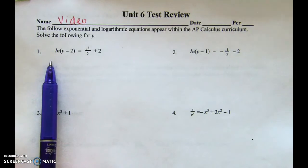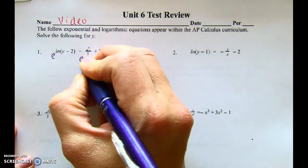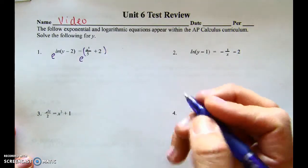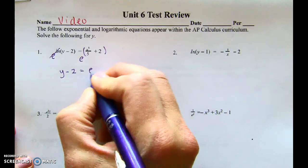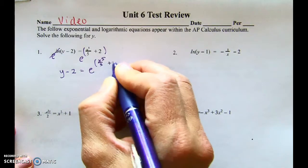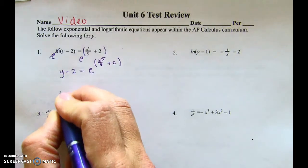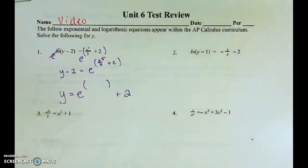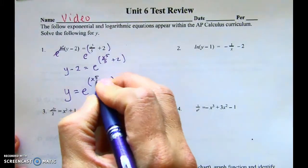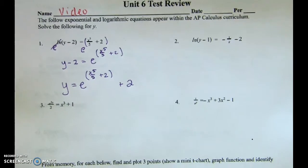What cancels the LN? The natural log — e. Watch how this works: you take e to the power of both sides. All of this is in the power of e — it's not multiplication — so the e and the LN cancel, and we get Y minus 2 equals e to all of that in the exponent. Then solve for Y: add 2 to both sides. Y equals e to the power of (x^5 / 5) plus 2. That's it — we solved for Y.